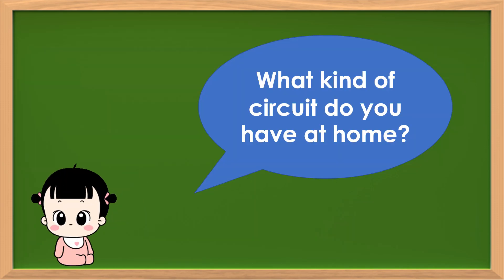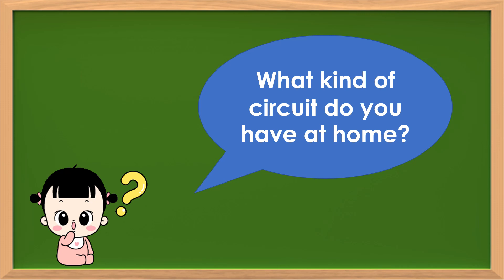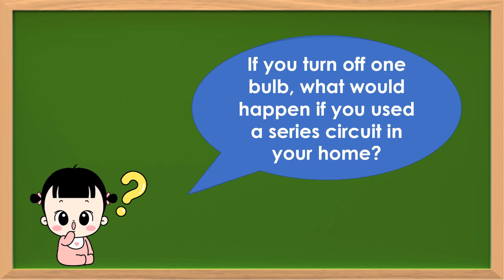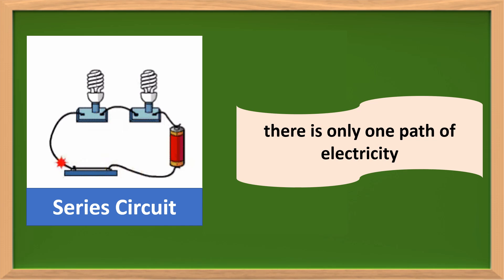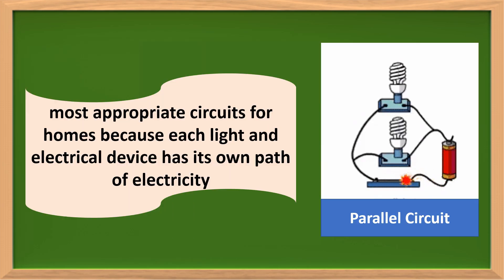What kind of circuit do you have at home? If you turn off one bulb, what would happen if you used a series circuit in your home? All the other bulbs will be turned off because in a series circuit there is only one path of electricity. Thus, the most appropriate circuit for homes is the parallel circuit. In such a circuit, each light and electrical device has its own path of electricity, so even if you turn off one of them, the others will still function.